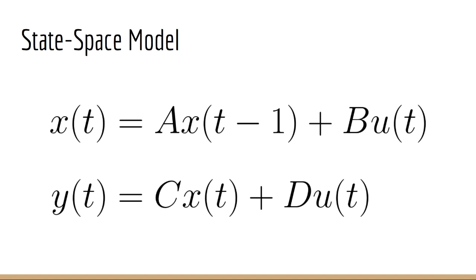Okay, so the state-space model is a linear model that specifies how some hidden state vector x of t is computed from the previous hidden state vector x of t minus 1 and some control input vector u of t. Note that these are related by matrices. By convention, we call these matrices A and B.